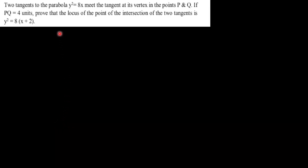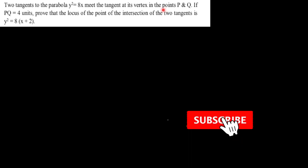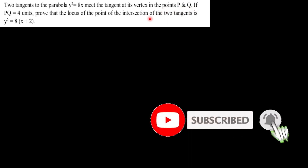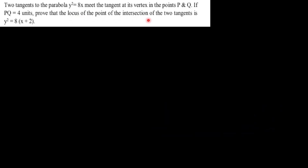Hello everyone, welcome to question number one of the advanced series on parabola. Today's question is: if two tangents to the parabola y² = 8x meet the tangent at its vertex in the points P and Q, and if PQ length is given as four units, then prove that the locus of the point of intersection of the two tangents is y² = 8(x + 2).